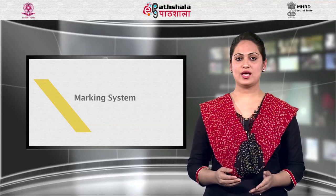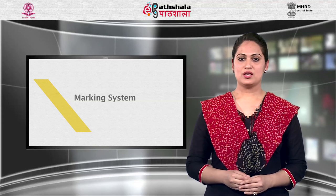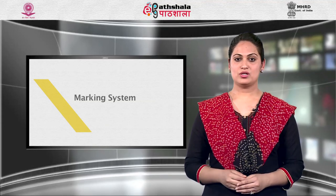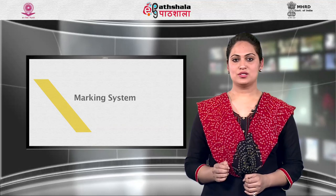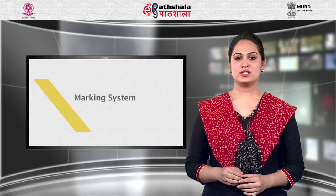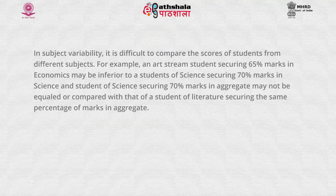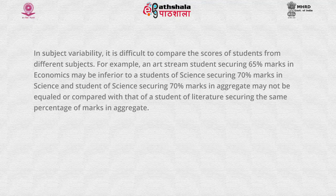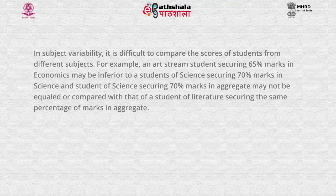The reliability of even objective-type or fixed-type questions is challenged when the same paper is checked and marked by different examiners. In the case of essay-type or open-ended questions, it does not provide reliability or objectivity. There is no certain answer for awarding a particular score, and this can always be questioned. In subject variability, it is difficult to compare scores from different subjects — an art stream student securing 65% in economics may not be comparable to a science student securing 70%, and students from different streams with the same percentage may not be equated.